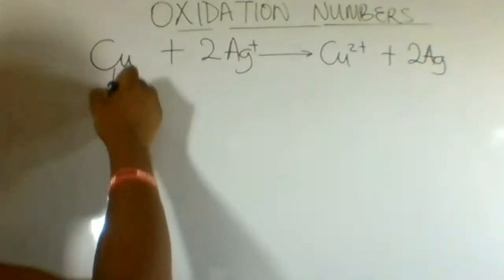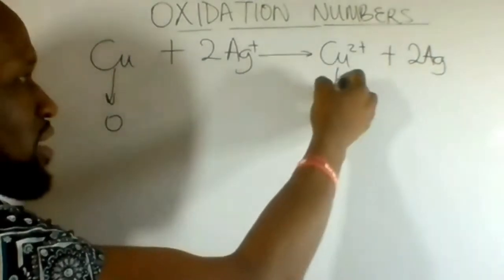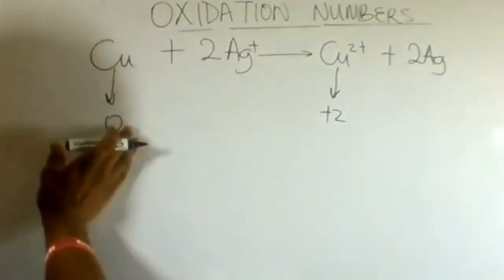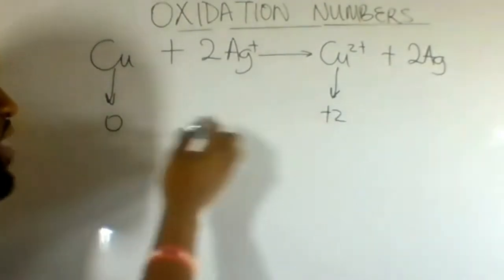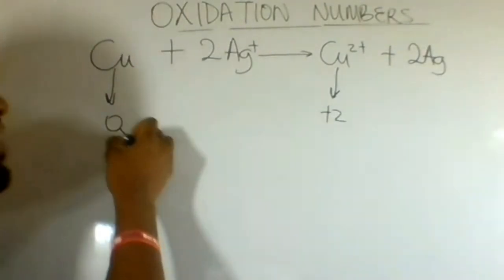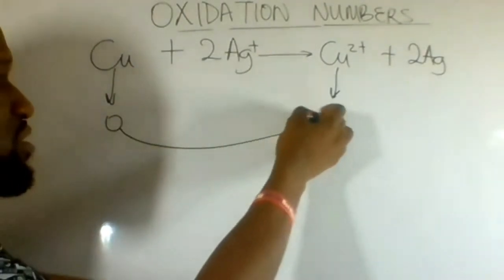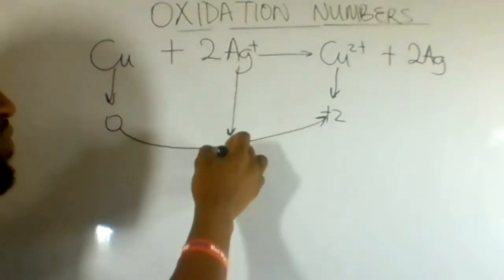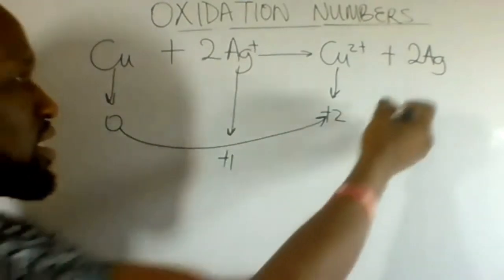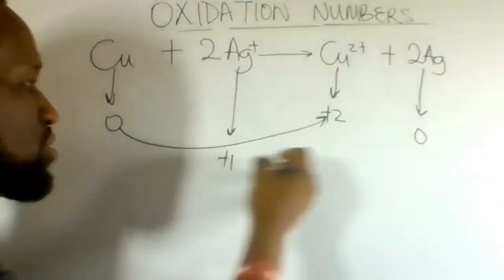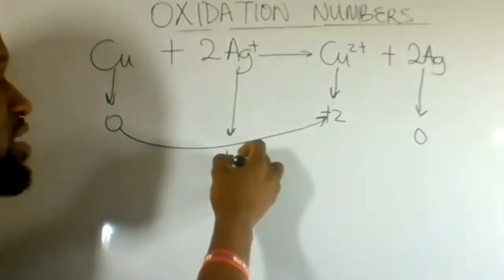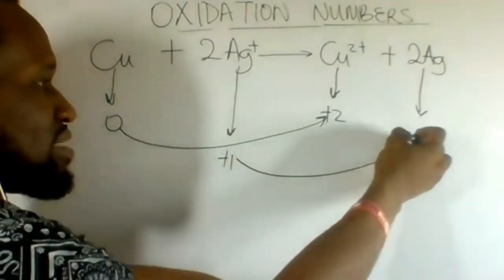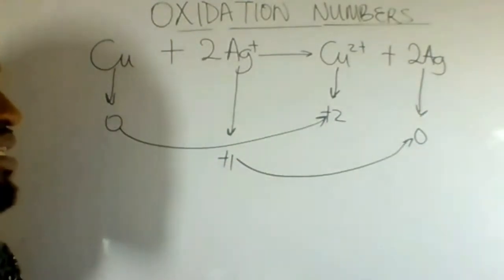Copper is zero on the left and is plus two on the right — copper has increased from zero to plus two. Silver is plus one on the left and silver is zero on the right — silver has decreased from plus one to zero.